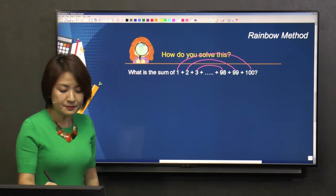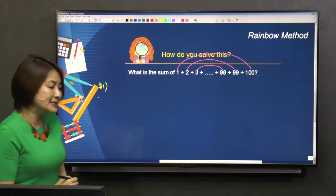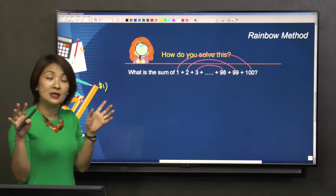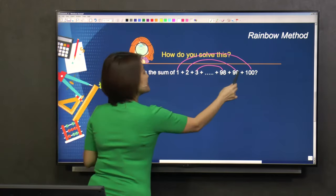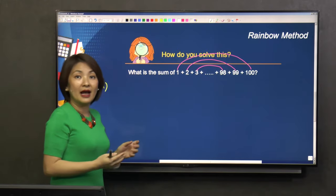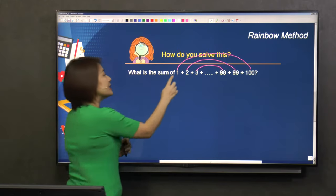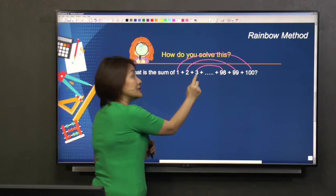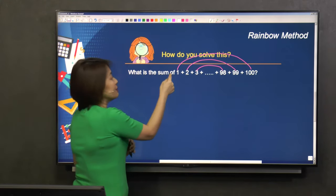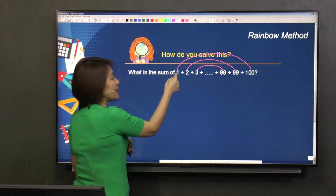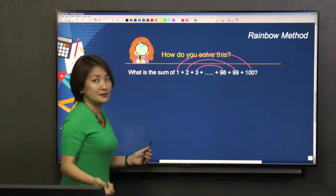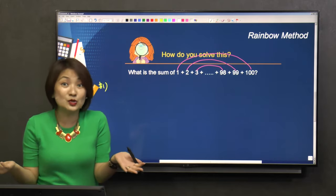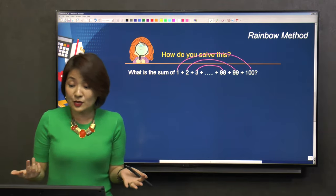The first step is to find the number of terms in a series of numbers. So in this series, how many terms are there? I call it terms because this is considered one term. This is one term. This is one term. So if I want you to find how many terms there are from 1 to 100, you don't really have to think very hard, right? Of course, it's 100.